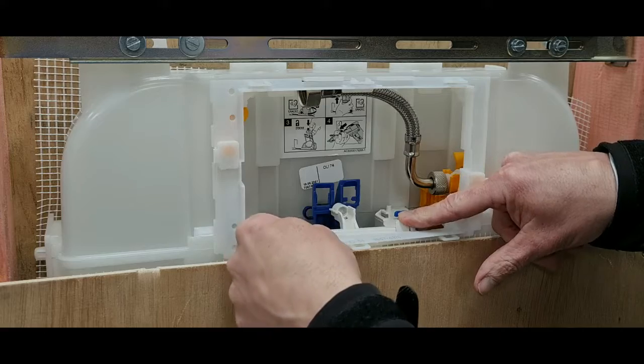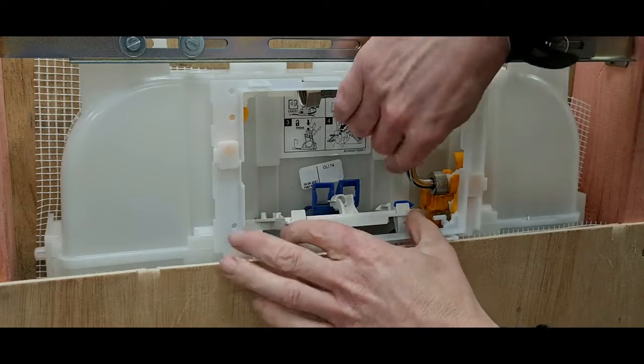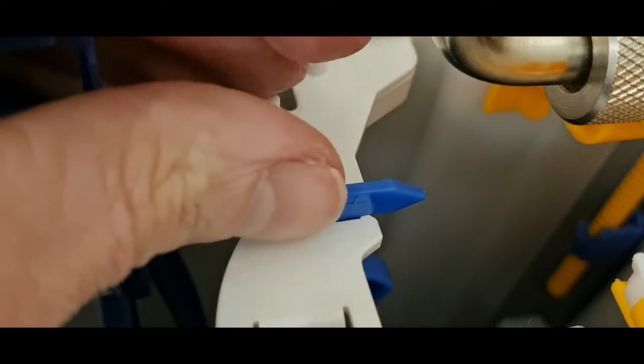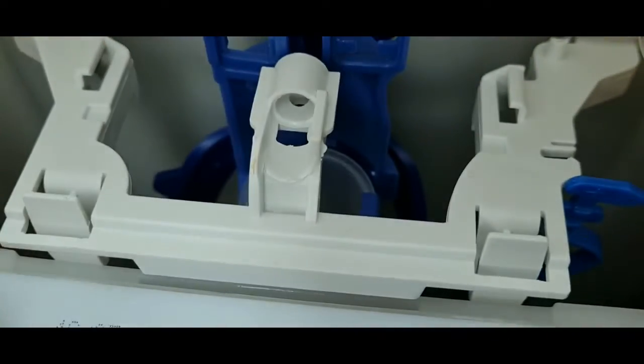Next you remove the rocker assembly subframe and be sure to release the blue clip as shown. The rocker assembly releases via the front clips as shown. Lift it up and away from the system.